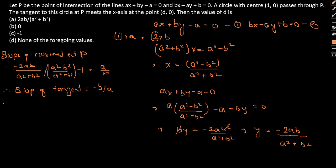So therefore, the equation of the tangent at P can be simply given as Y plus 2AB by A squared plus B squared equal to minus B by A times X minus A squared minus B squared by A squared plus B squared.